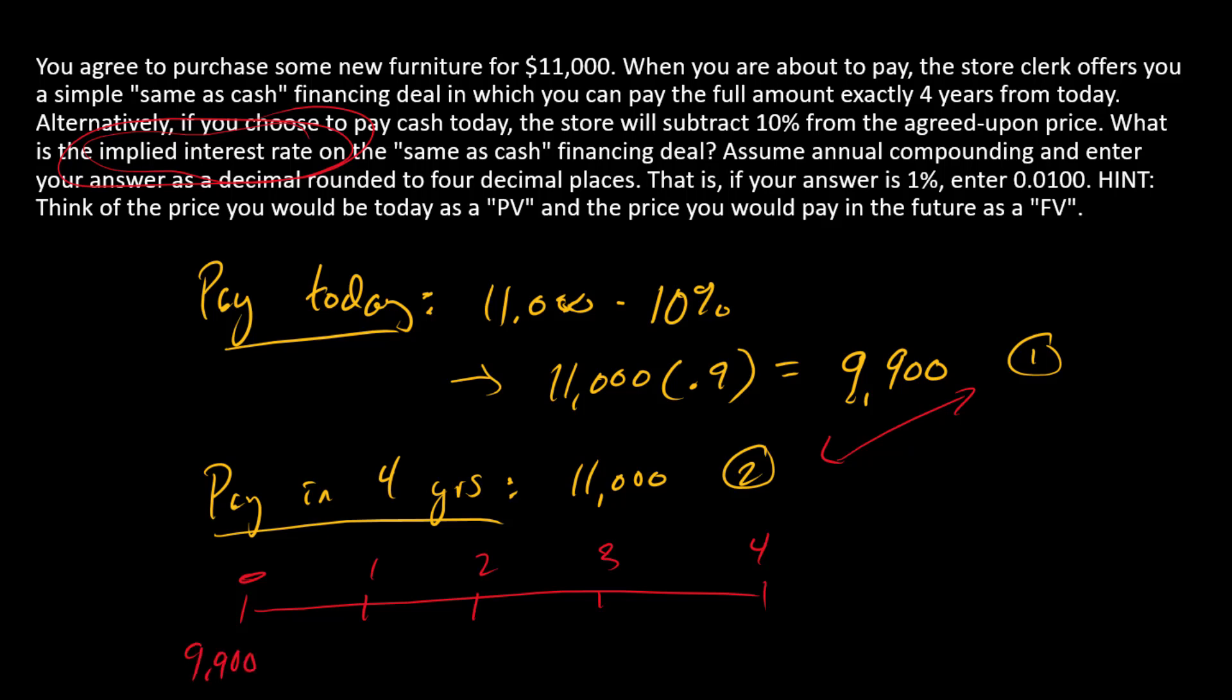We have $9,900 here and $11,000 at year four. Those are equivalent payment options, so we just need to find an R that sets those to be equivalent. This is a basic present value of a single cash flow calculation.